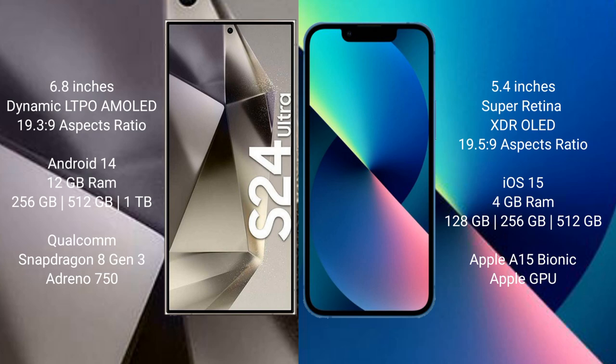Samsung Galaxy S24 Ultra runs on the Android 14 operating system. iPhone 13 mini runs on the iOS 15 operating system. Samsung Galaxy S24 Ultra comes with 12GB RAM and 256GB, 512GB, and 1TB internal storage options, powered by a Qualcomm Snapdragon 8 Gen 3 processor and Adreno 750 GPU.